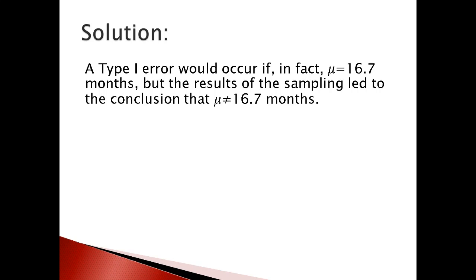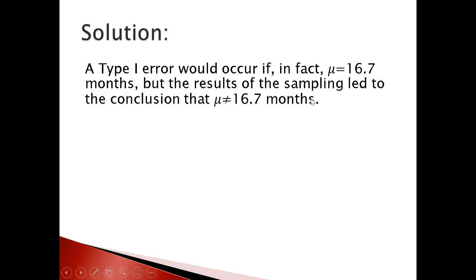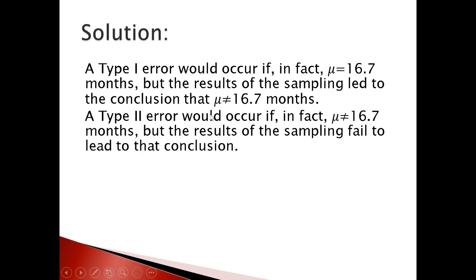Recall the definition of Type 1 error: rejecting the null hypothesis when it is in fact true. Type 1 error occurs if in fact μ = 16.7 — remember, this is your null hypothesis because for the null hypothesis we use the equality sign. If your null hypothesis is true but the result of sampling leads to the conclusion that the null hypothesis is not true, that is the definition of Type 1 error.